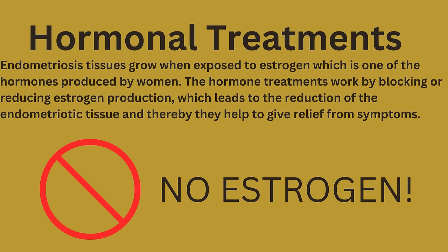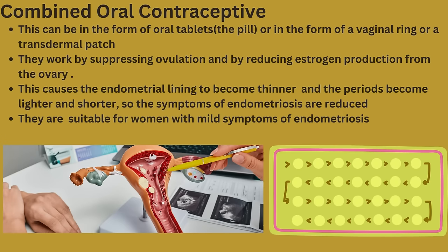Hormonal treatments: Endometriosis tissue grows when exposed to estrogen, one of the hormones produced by women. Hormone treatments work by blocking or reducing estrogen production, which leads to reduction of endometriotic tissue and thereby provides relief from symptoms. Examples include the combined oral contraceptive, which can be in the form of oral tablets (commonly known as the pill), a vaginal ring, or a transdermal patch. These work by suppressing ovulation and reducing estrogen production from the ovary, causing the endometrial lining to become thinner so periods become lighter and shorter — thus reducing symptoms. They are suitable for women with mild symptoms of endometriosis.